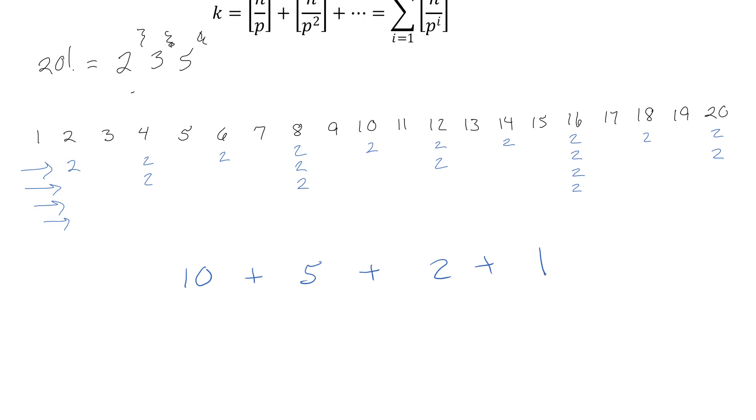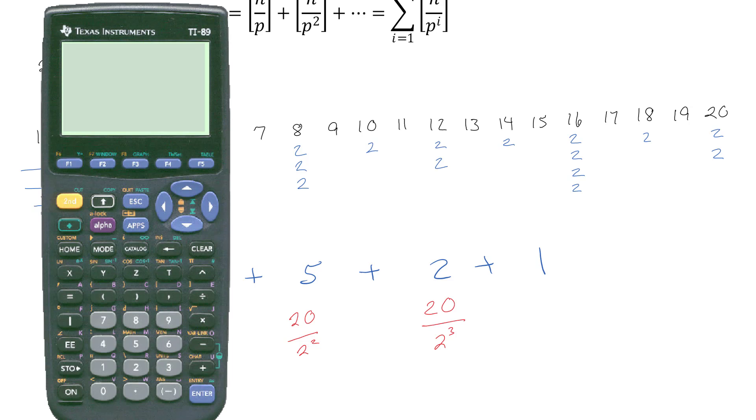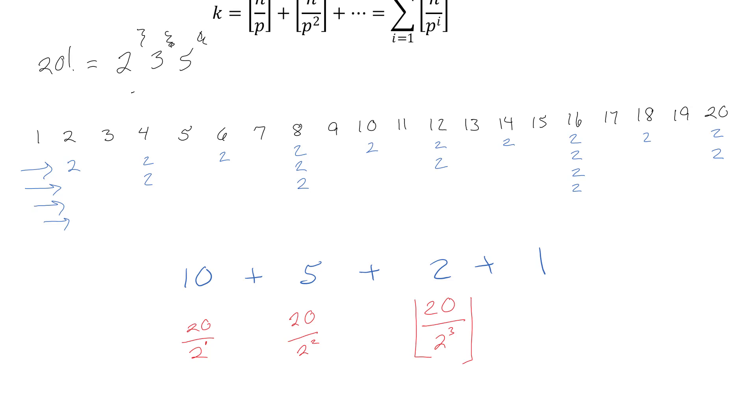So how do I get 10 from 20? Clearly 20 divided by 2 is going to be 10. How do I get to 5? 20 divided by 4, that's 5. I'm starting to see a pattern here because this is 2 to the first, this is 2 squared. To get to 2, clearly 20 divided by 8. Except 20 divided by 8 is not an integer. 20 divided by 8 is 2 and a half. So I have 2 and a half but I wish I had 2, so I actually want to take the floor of that.